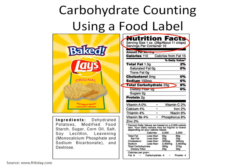Reading food labels can be confusing, but you only need to look at a few key points on the label when carbohydrate counting. The nutrition facts can be found on the side or the back of the food package. First, you need to look at the serving size, which is listed at the top of the food label.